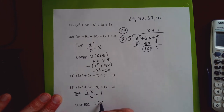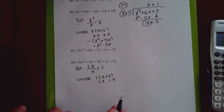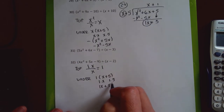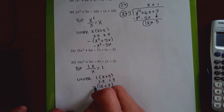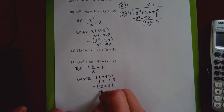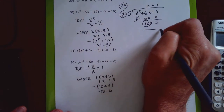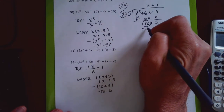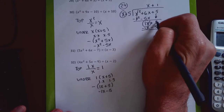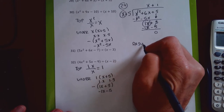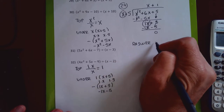I take the 1 that's on top and multiply it by the x plus 5. I do 1 times x, which is 1x, and 1 times 5, which is positive 5. I need to subtract, so I find the opposite: the opposite of positive 1x is negative 1x, the opposite of positive 5 is negative 5. Underneath my division bar I get negative 1x minus 5. Both cancel, so I get a remainder of 0. My answer is x plus 1.